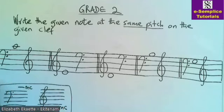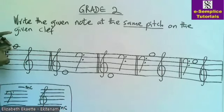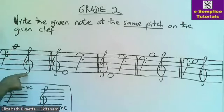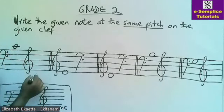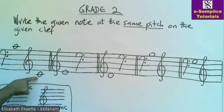Let's start the first question together. This note here on the bass clef is C — this is middle C. So you have to look for middle C on the treble clef or stave, and you will find your middle C here. This is your first answer. You have written this note at the same pitch on the treble clef.